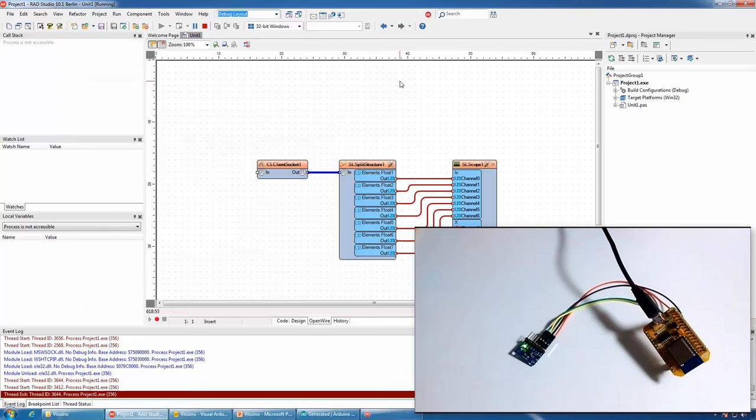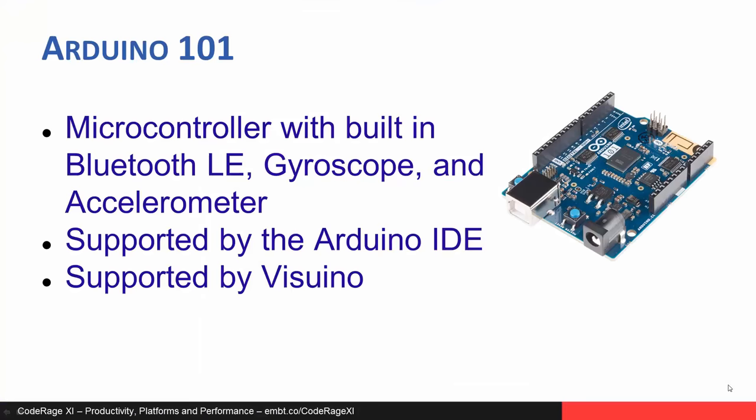A relatively new member of the Arduino family is the Arduino 101. It is an Intel Curie-based microcontroller with built-in Bluetooth LE, gyroscope, and accelerometer. It is supported both by the Arduino IDE and Visuino. Since it has Bluetooth, it is a good candidate to communicate with from Delphi programs on mobile devices.